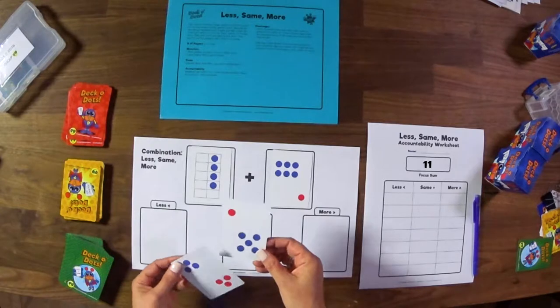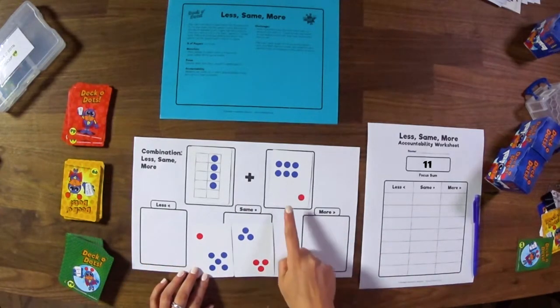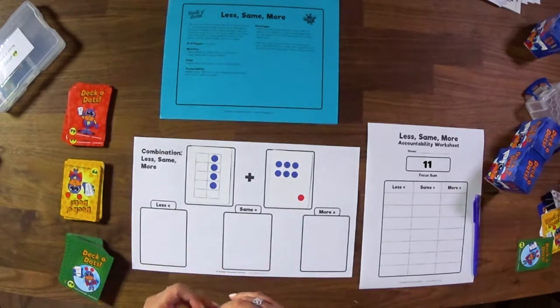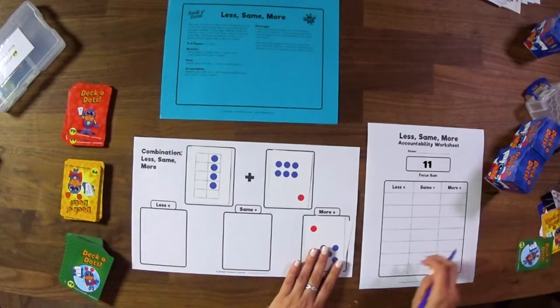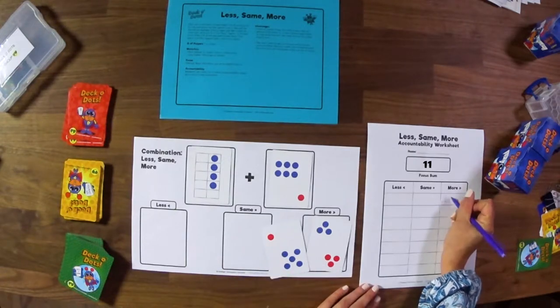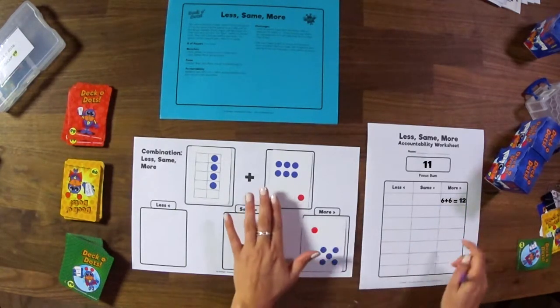So I'm going to flip my sum. The sum that I have is going to be 6 plus 6. Our focus sum is 11. The sum of this is 12. So I know that these two cards total something that is more. So I'm going to have over here on the more column, I'm going to go ahead and put my 6 plus 6 equals 12. That is more than our focus sum.